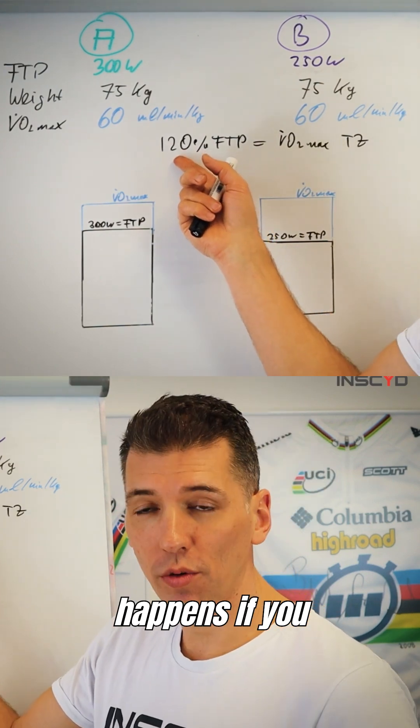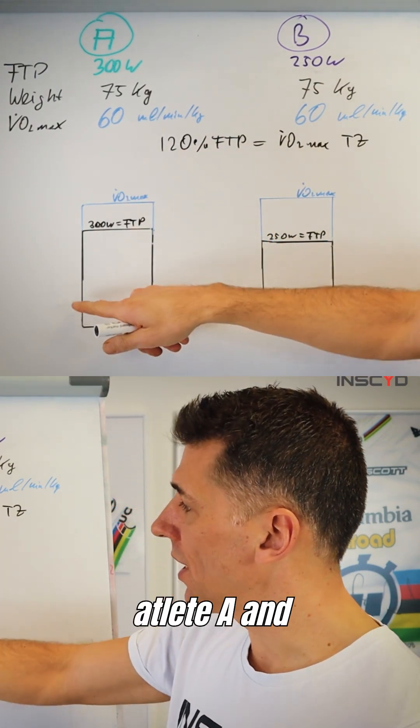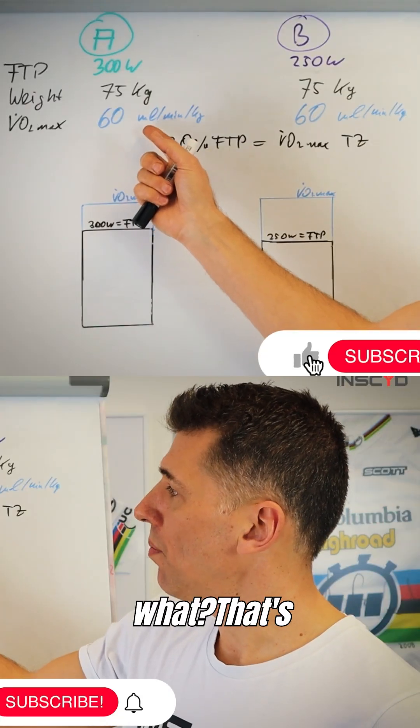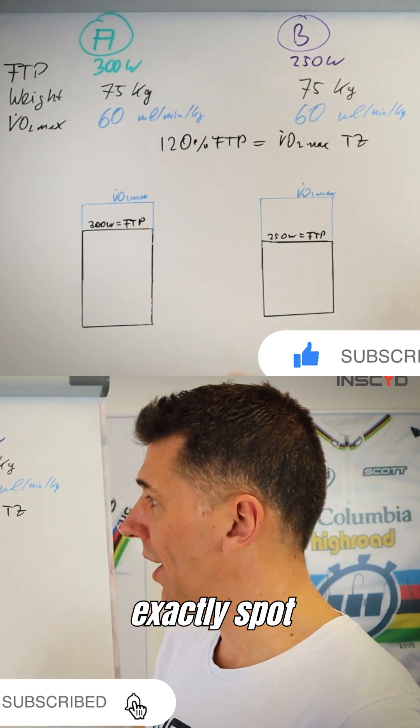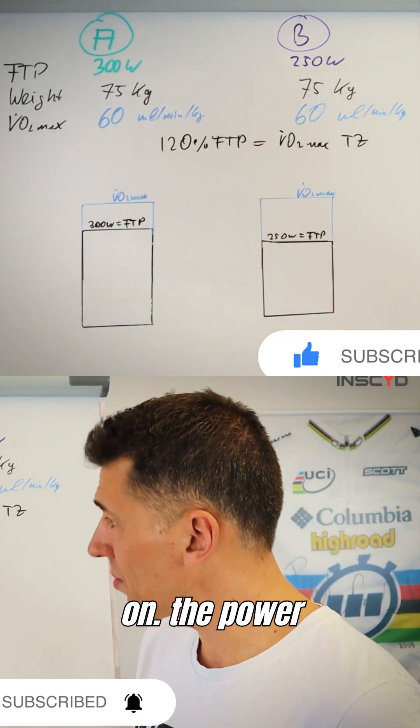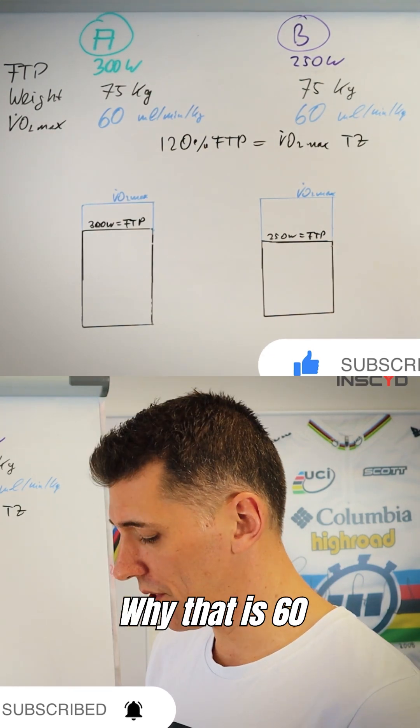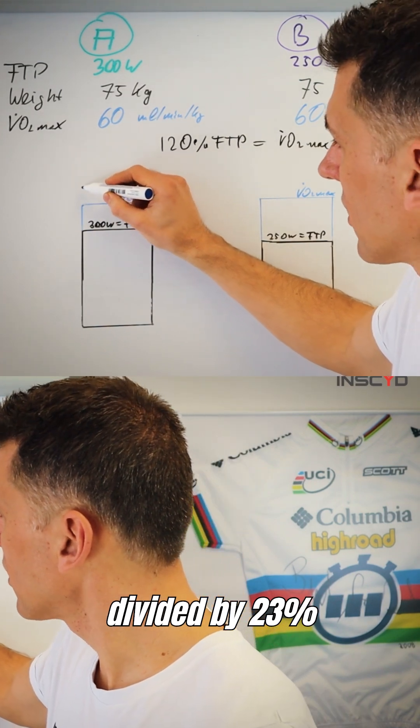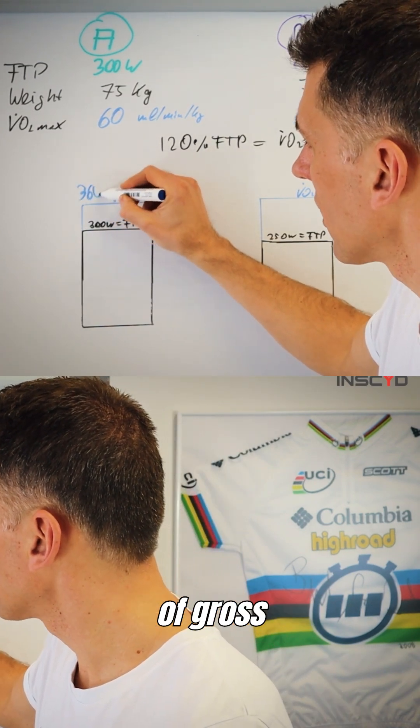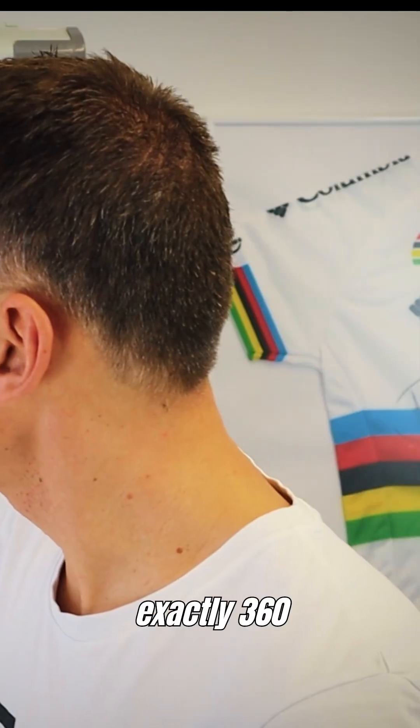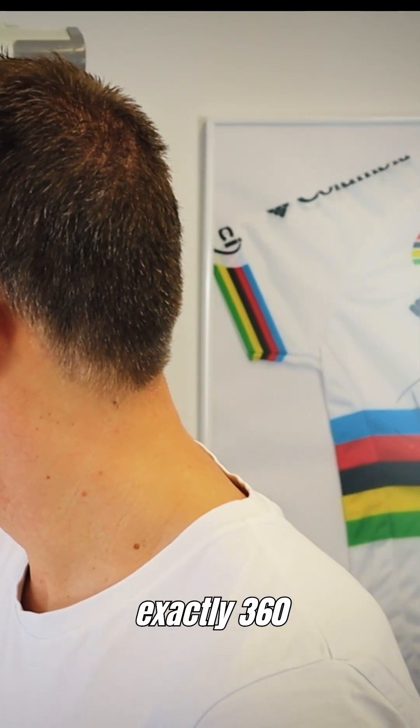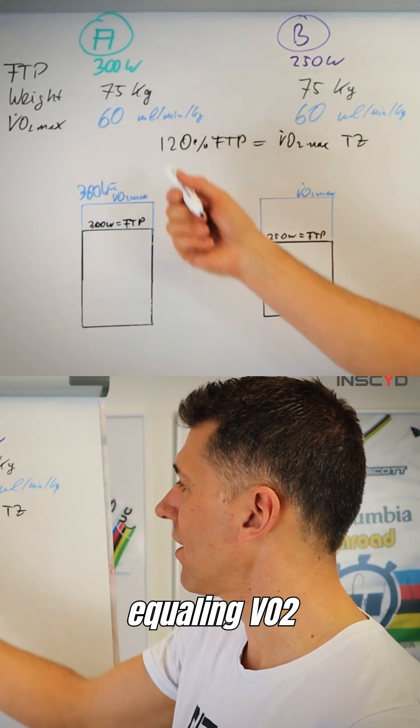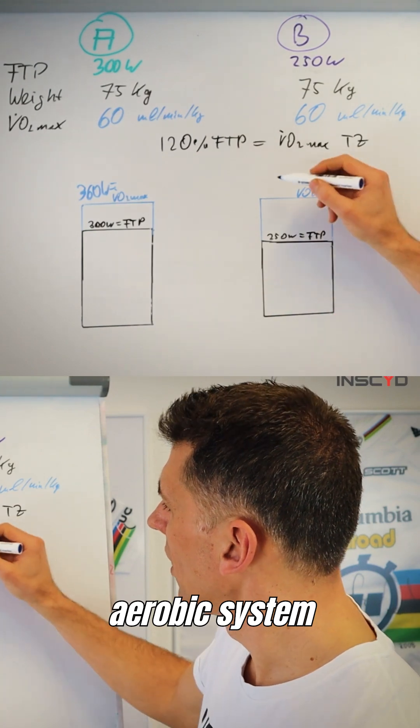Now what happens if you have an FTP of 300 watts in Athlete A and you go 120%? That's approximately exactly spot-on the power output equaling 60 milliliters. Why? 60 milliliters multiplied by 75 kilograms and then divided by 23% gross efficiency gives you pretty much exactly 360 watts of power output equaling VO2max. So this is the power the aerobic system can deliver.